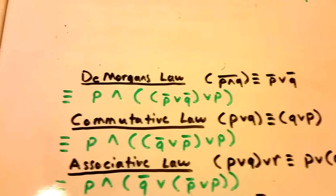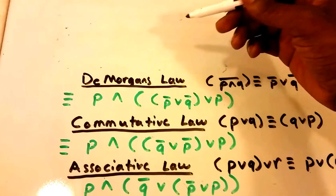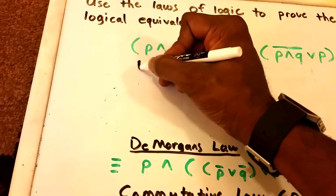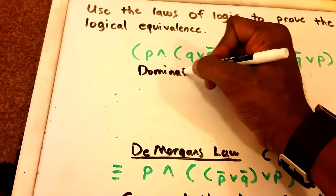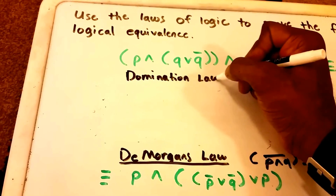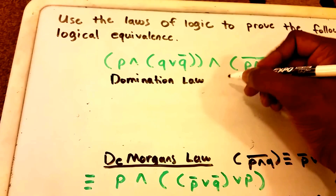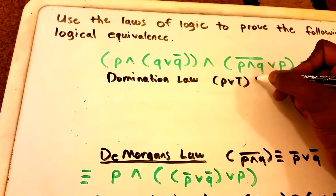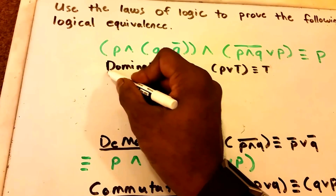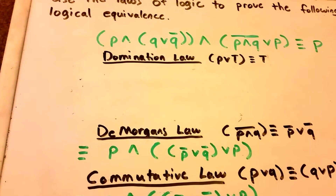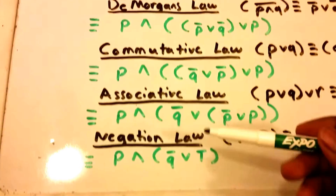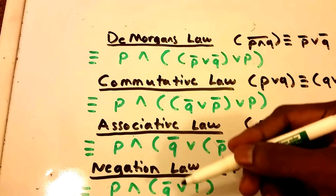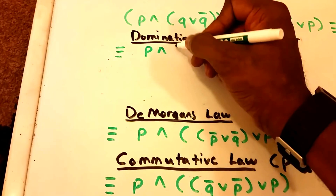Now let's use the Domination Law. The Domination Law states that P∨True is logically equivalent to True. So our expression P∧(¬Q∨True) simplifies to P∧True.